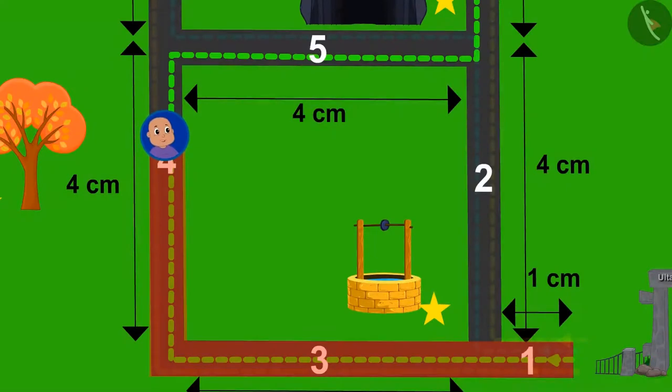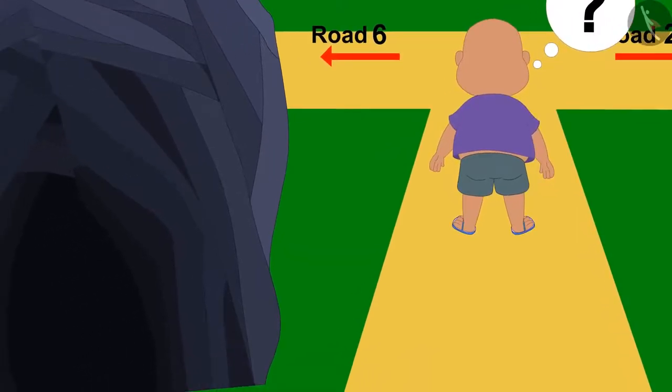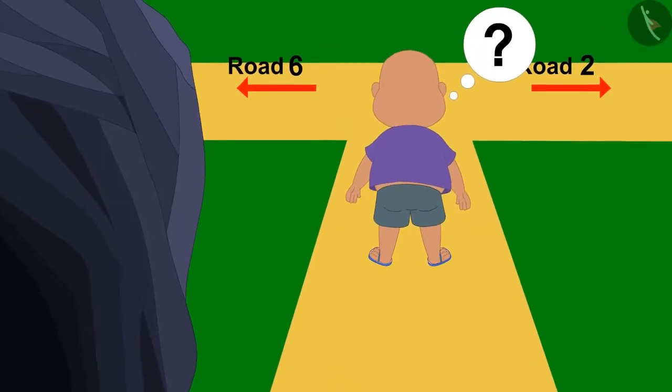Bablu crossed road number 4 in fear and also walked on road number 5 and has come to an end of it. Now, Bablu is thinking which way he has to turn. Can you tell us which direction Bablu has to turn from the unique cave to road number 6?